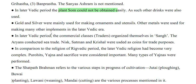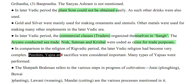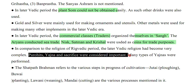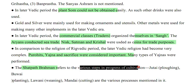In the later Vedic period, commercial classes and traders organized themselves in Sangha. The Aryans conducted sea trade; Nisq, Satnam and Krishal were used as coins. Compared to the Rigvedic period, the later Vedic religion had become very complex — Purohits, Yajna and sacrifice were considered important. The Satpath Brahman refers to various steps in cultivation: Jutai (plowing), Bhoai (planting), Lavani (weaning), and Mandai (cutting).